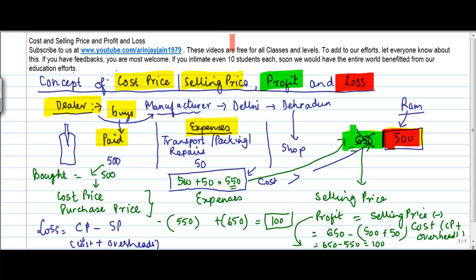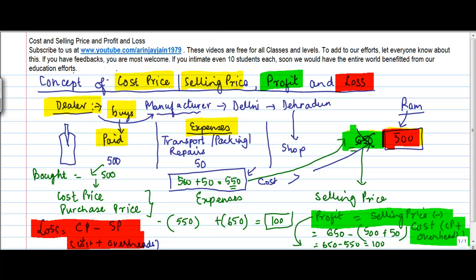Profit is calculated as selling price minus cost price, whereas the loss is calculated as cost price minus selling price because cost price is the bigger item there.